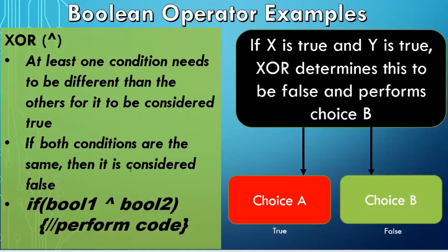With XOR, if both conditions are the same, then it's false. If Boolean1 is true and Boolean2 is true, based on the XOR, that would make this condition false because they're both the same. If Boolean1 is false and Boolean2 is false, that makes this whole condition false. If Boolean1 is true and Boolean2 is false, that makes them different, so this condition is now true.